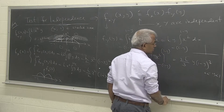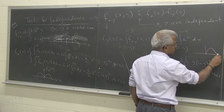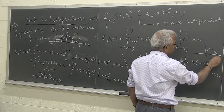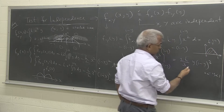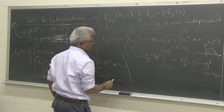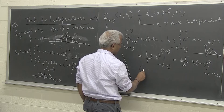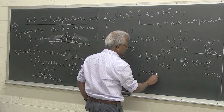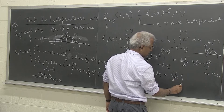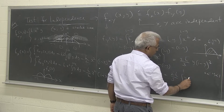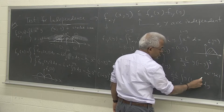Integrating x² gives x³/3. The limits are −(1−y) and (1−y), which are negatives of each other, so the result doubles: this gives (2k/3)·y·(1−y)³ for y between 0 and 1. If you plot this, the density function is 0 at both y = 0 and y = 1, with a smooth curve in between, and the area under it equals 1, which we use to find k.